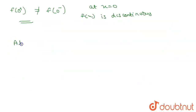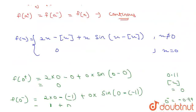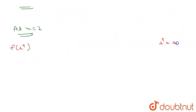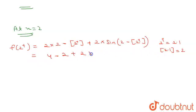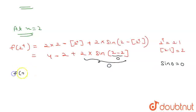Now we check at x equal to 2. For f(2+), let's suppose a value like 2.1, so the greatest integer function of 2.1 equals 2. Then f(2+) = 2×2 − 2 + 2×sin(2 − 2) = 4 − 2 + 2×sin(0) = 2 + 0. So f(2+) equals 2.